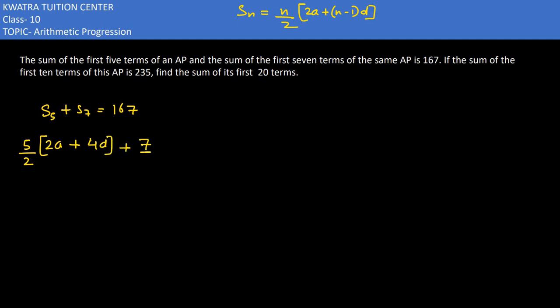S7 would be 7 by 2, bracket 2a plus 6d. So after that it will be 2a plus 6d is 167. Now here we have brackets, so 5 into 2 is common here, we have a plus 2d in bracket.